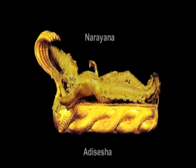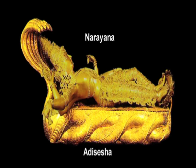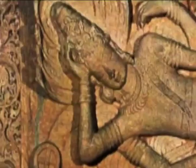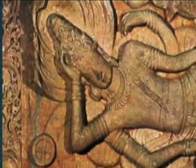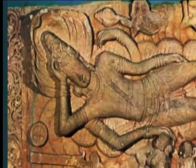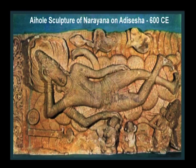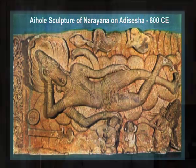Adi Sesha is shown to bear Narayana in his coiled bed, with Narayana in a reclining pose. This takes us back to the start of the creation process, where within the cosmic waters lies Narayana — the state of inertness and calm. Adi Sesha and Narayana are thus symbolic of the state of the cosmos between any two successive cycles of creation.